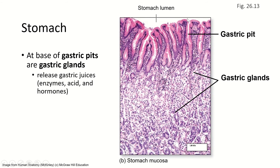There are gastric pits — these are little indentations in the epithelium of the stomach. Below those there's a really thick layer of gastric glands, full of cells that are going to release enzymes, acid, and hormones. The hormones are released to the bloodstream; the enzymes and acid are released to the lumen. This is all the mucosa of the stomach — the thickest of anywhere in the GI tract.